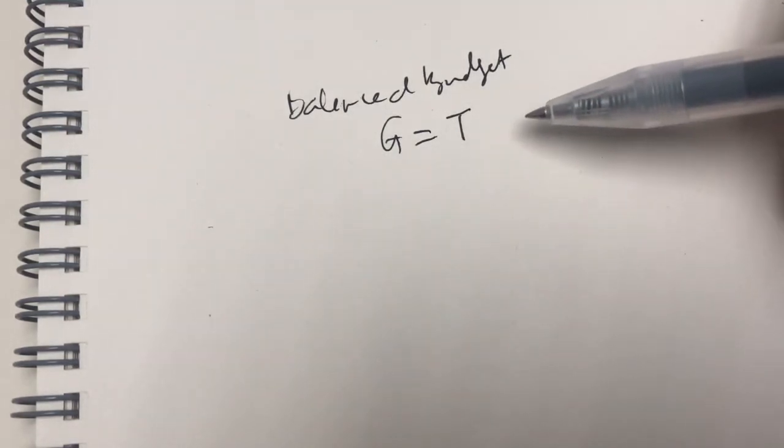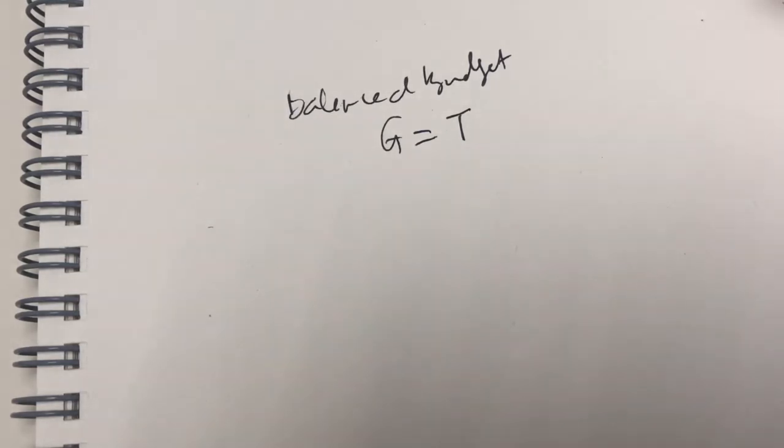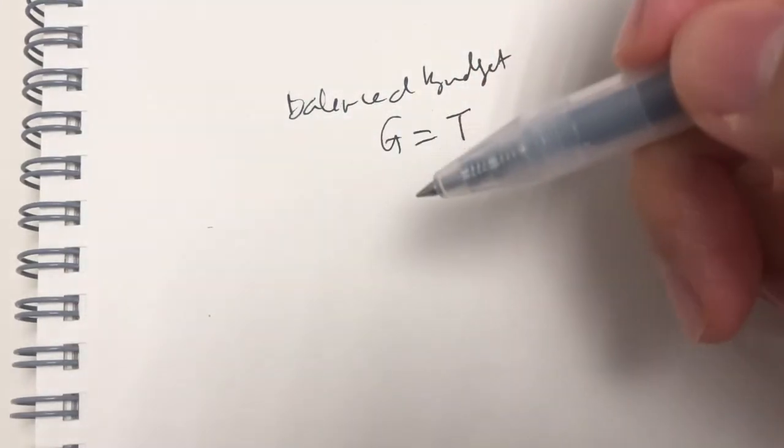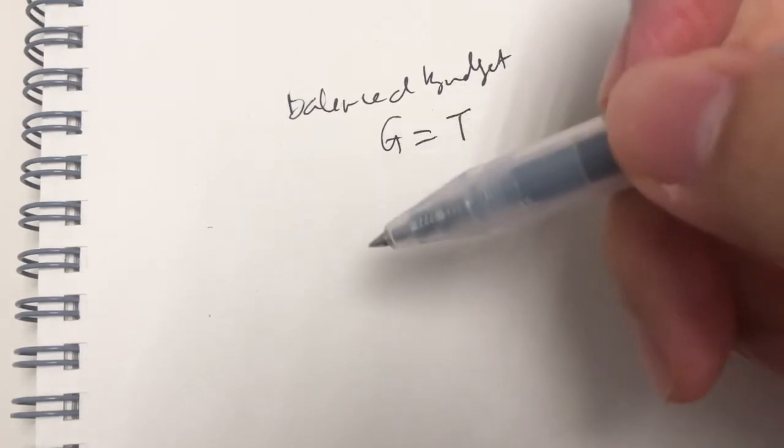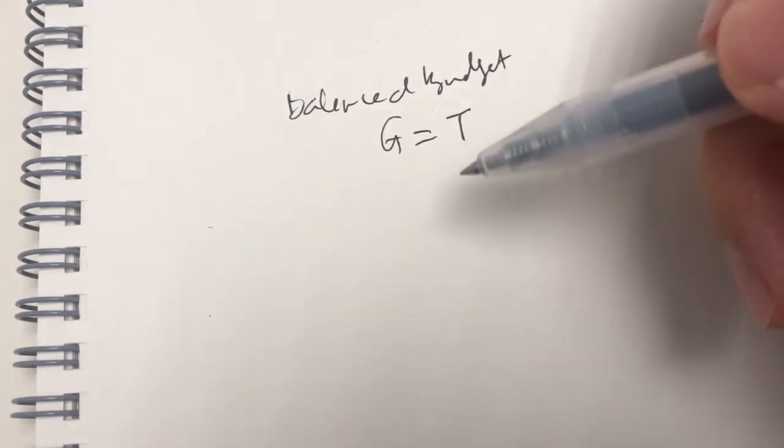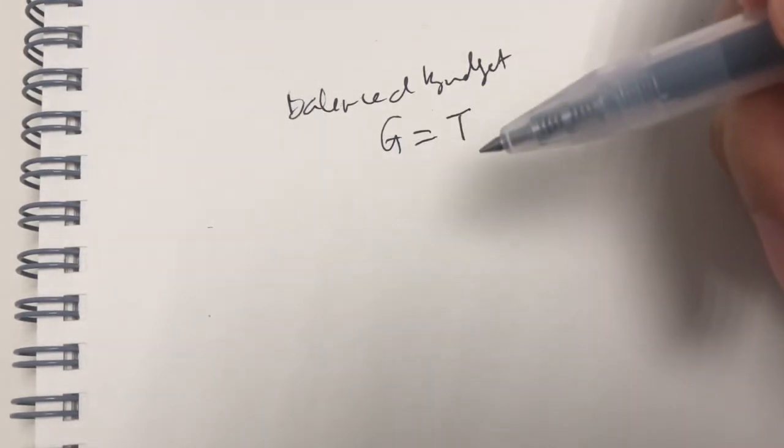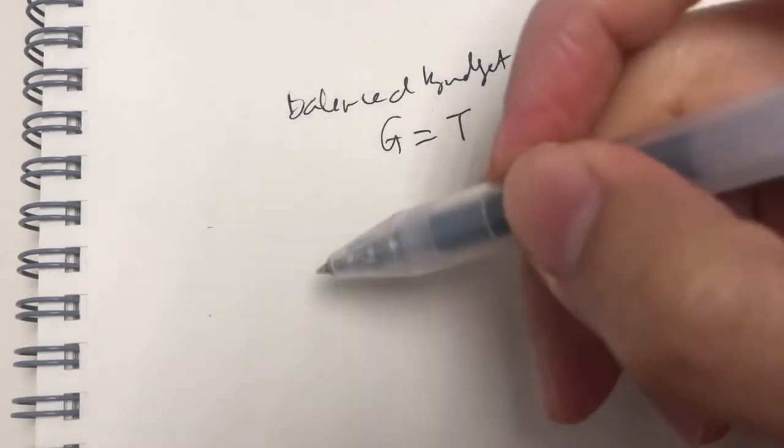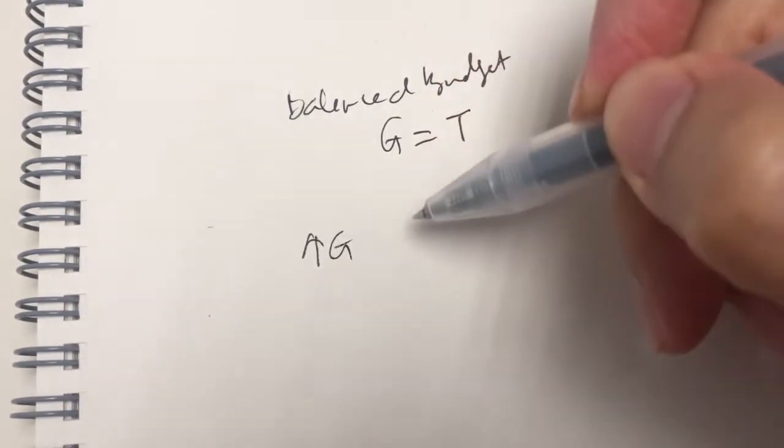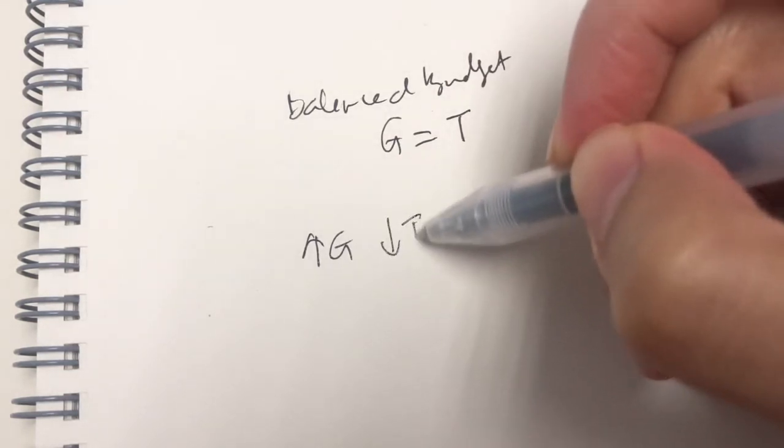And then, let's say later on, an expansionary fiscal policy was adopted. Maybe because the economy is experiencing recession or high unemployment. Therefore, the government opts for an expansionary fiscal policy. Now, do you remember the tools? What should the government do when there's a recession? The government should either increase government spending or reduce taxation, right?